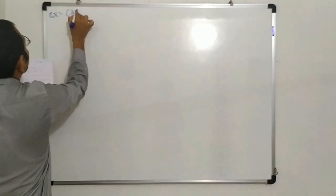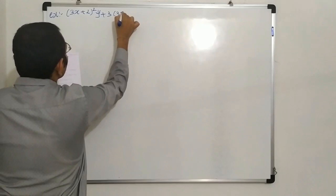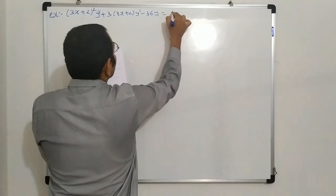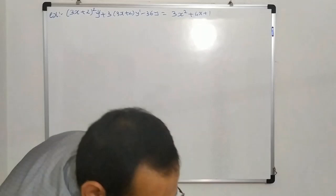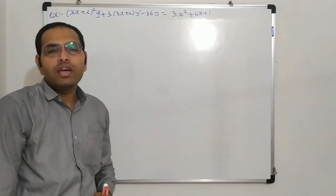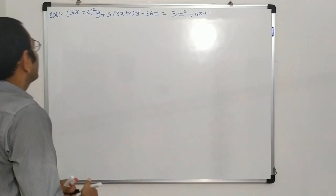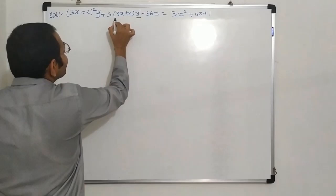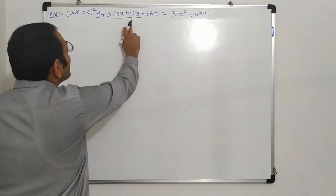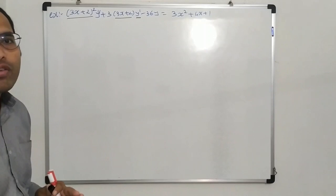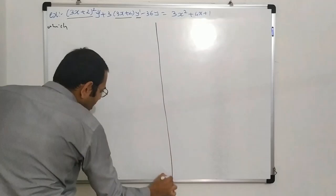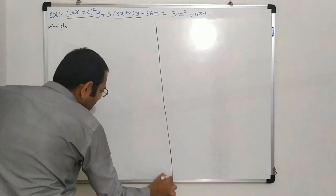Example 1: (3x + 2)² y'' + 3(3x + 2) y' − 36y = 3x² + 4x + 1. Now, first of all, we identify whether the given differential equation is Legendré or not. Here, single-times differentiation term is present, then (AX + B) must be multiplied — A = 3 and B = 2. Two times differentiation means (AX + B)² must be present. So we can say this is a Legendré Linear Differential Equation.